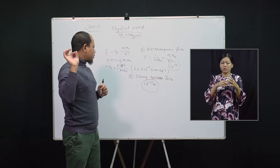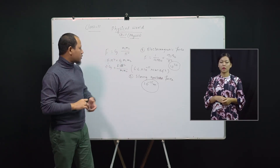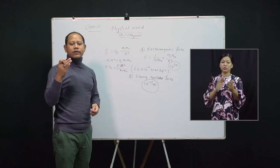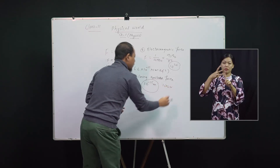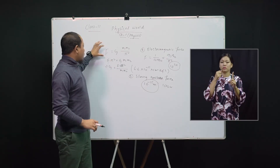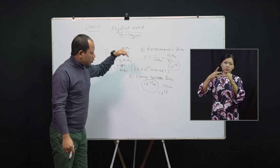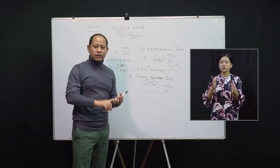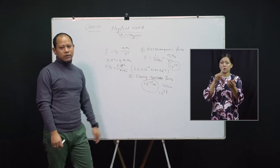If there is no strong nuclear force, the nucleus becomes unstable. In comparison to electromagnetic force, the strong nuclear force is 100 times larger. If we compare strong nuclear force with gravitational force, it is about 10³⁸ times larger than the gravitational force. Its range is 10⁻¹⁵ meter.